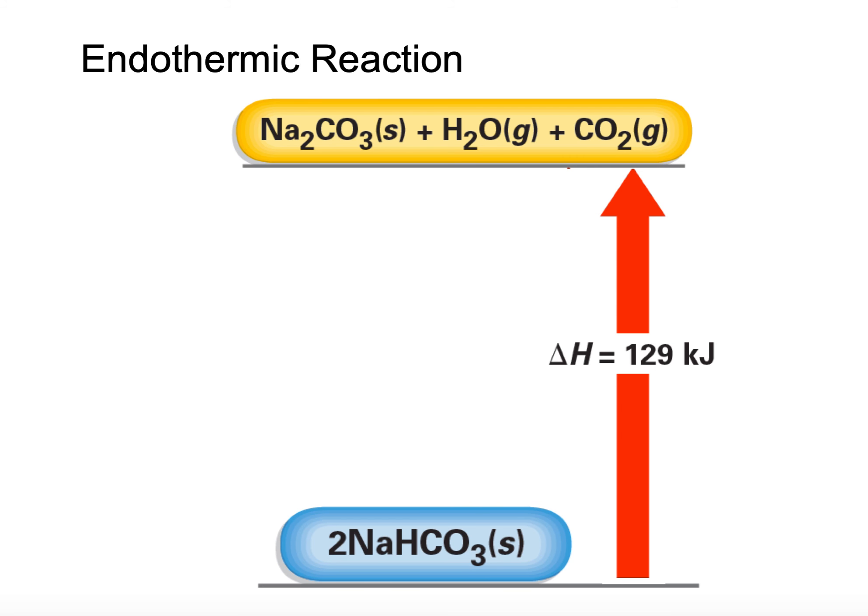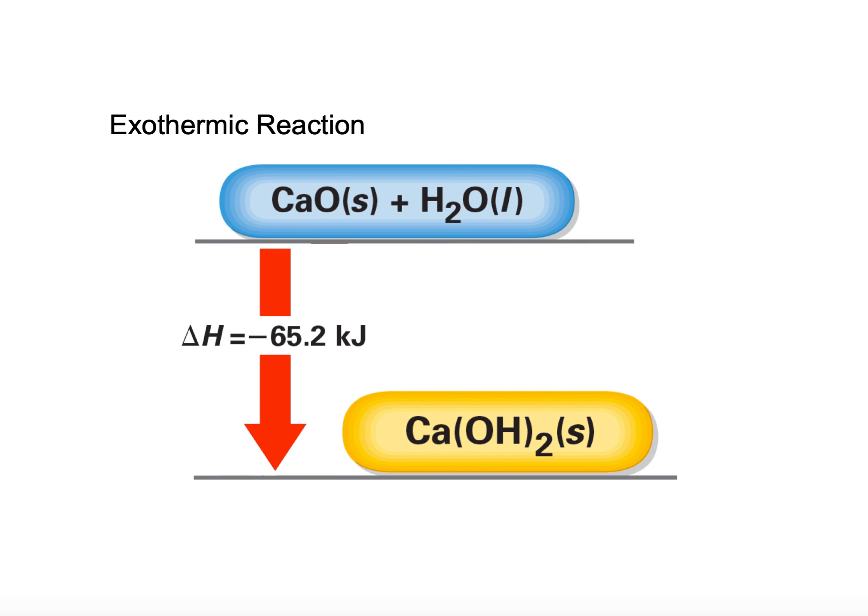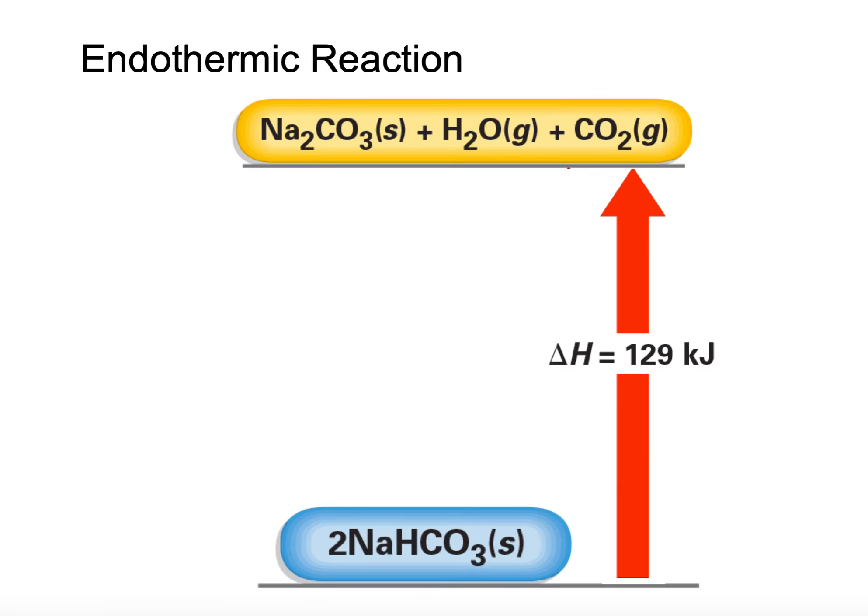Just one more time: an exothermic process will have a negative delta H; an endothermic process will have a positive delta H.